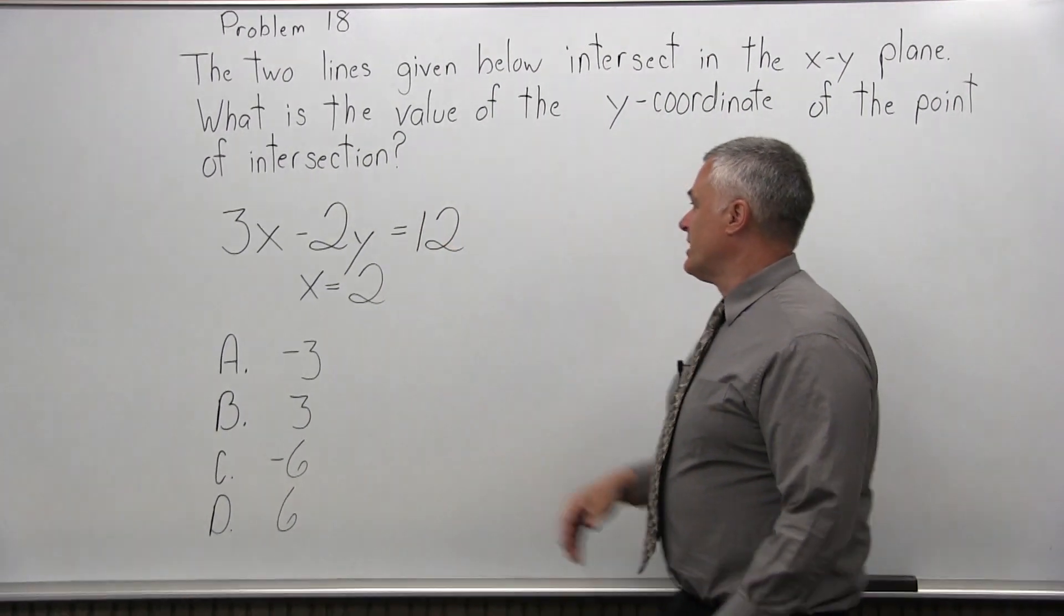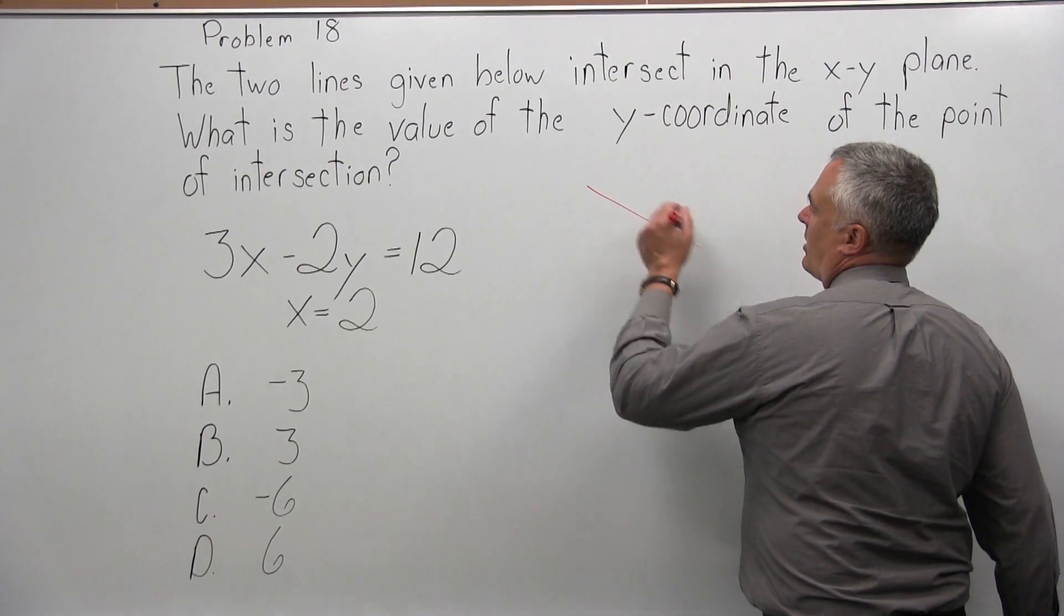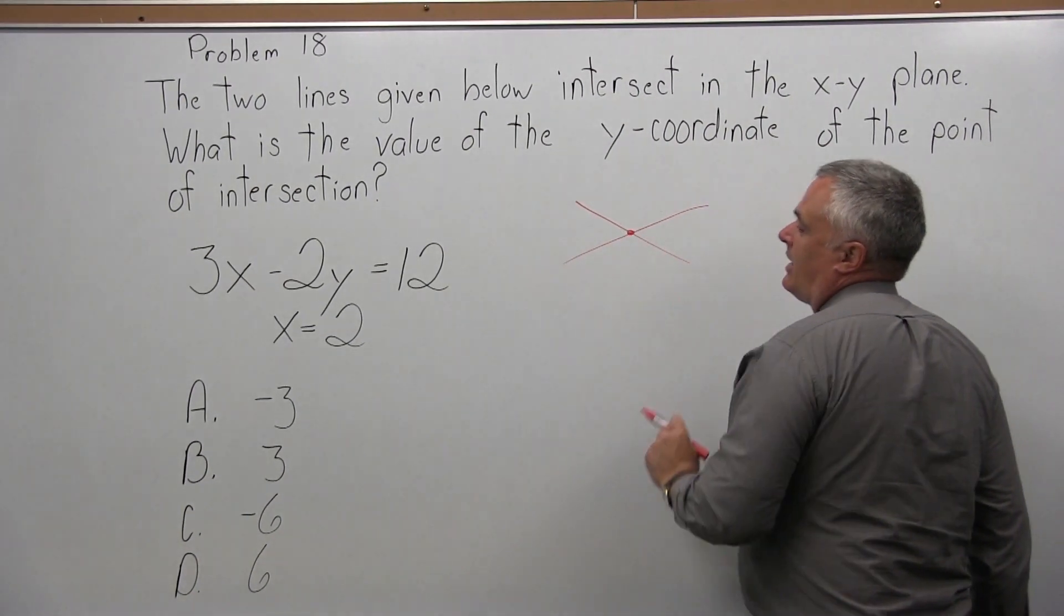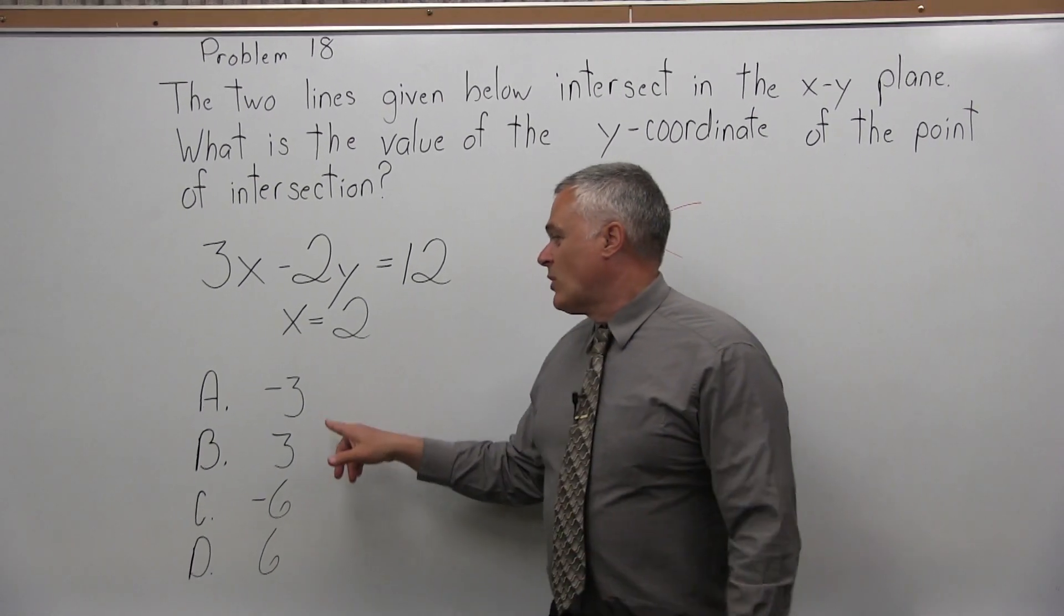The y-value at the point where they cross - if they cross at some point, they would have an x and a y-coordinate. What is the value of the y-coordinate?